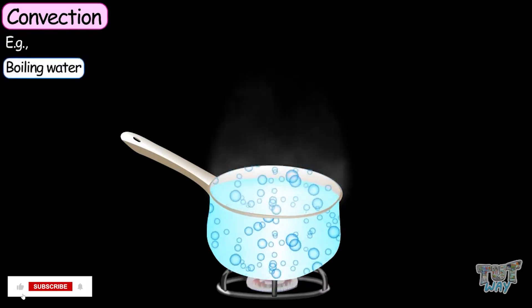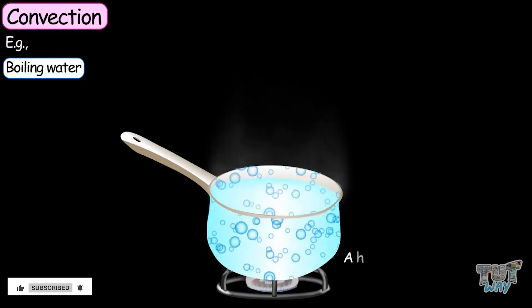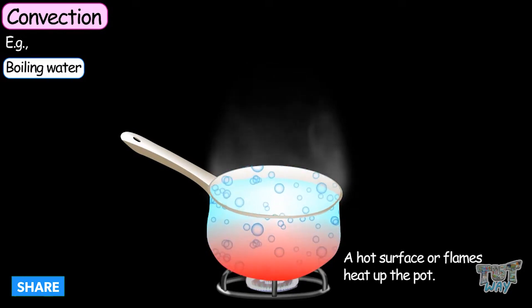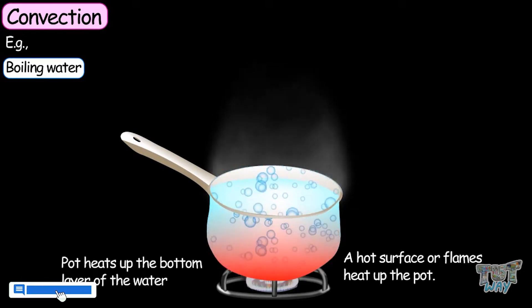Boiling water is an example of heat transfer through convection. First of all, a hot surface or flames heat up the pot. Heat transfers from the bottom layer of the pot to the bottom layer of the water.